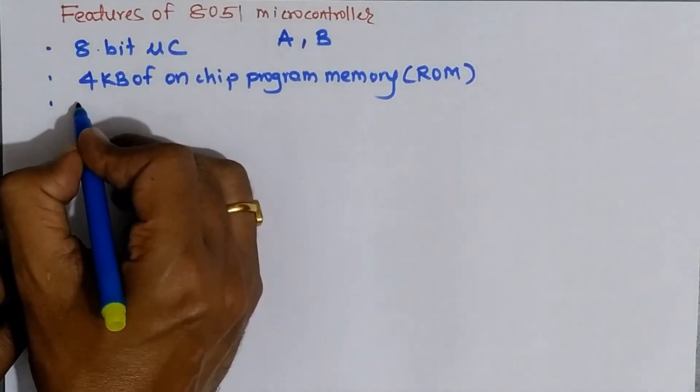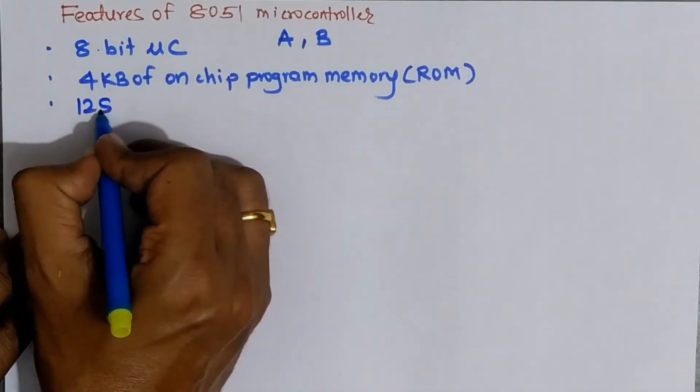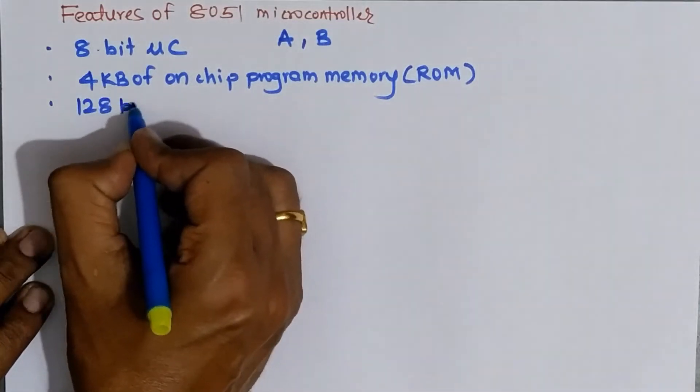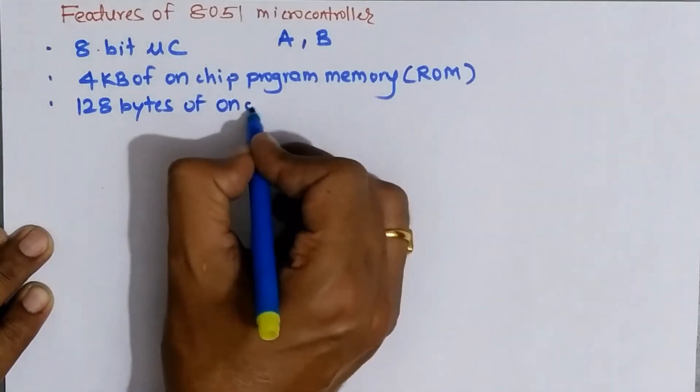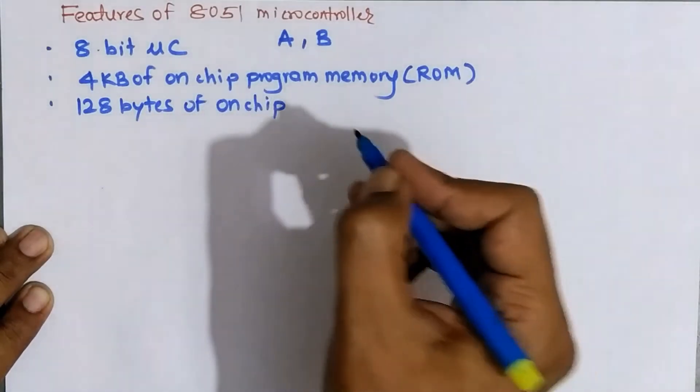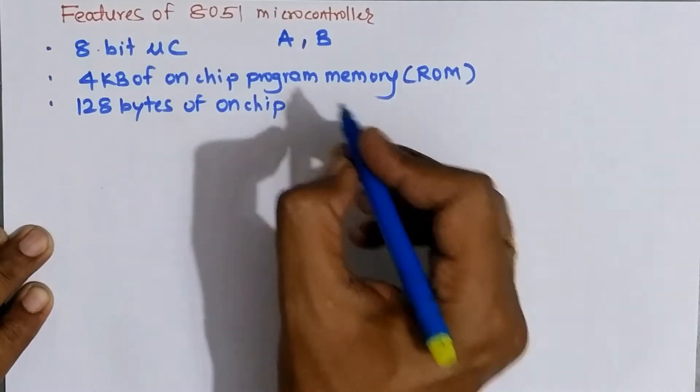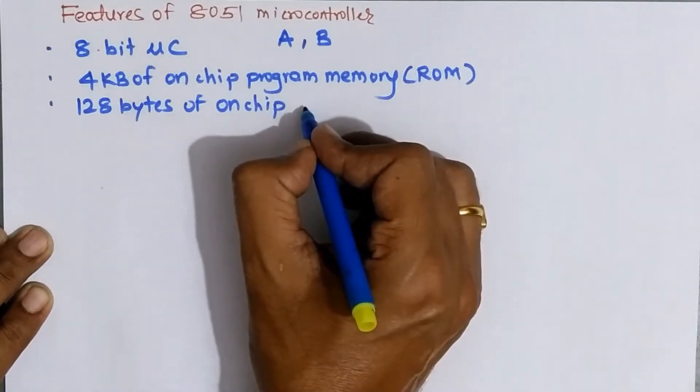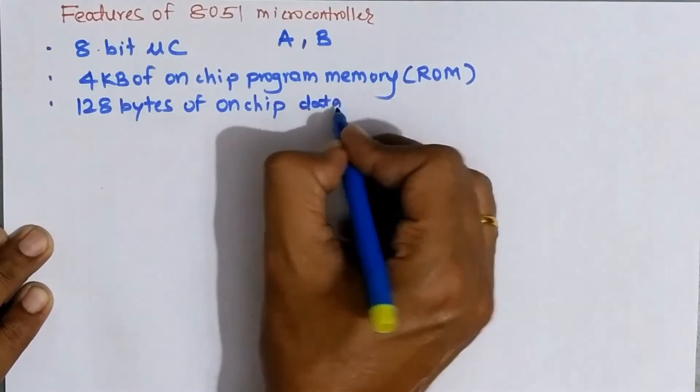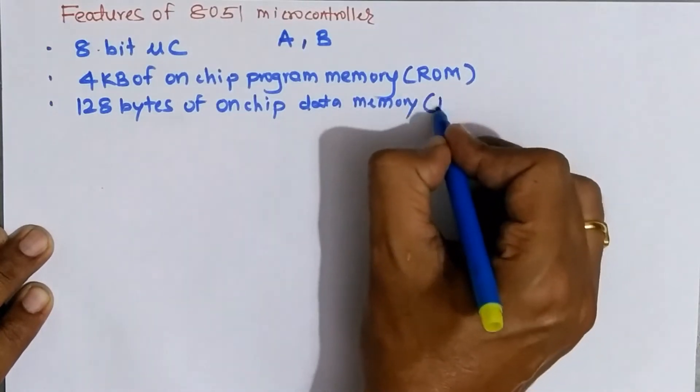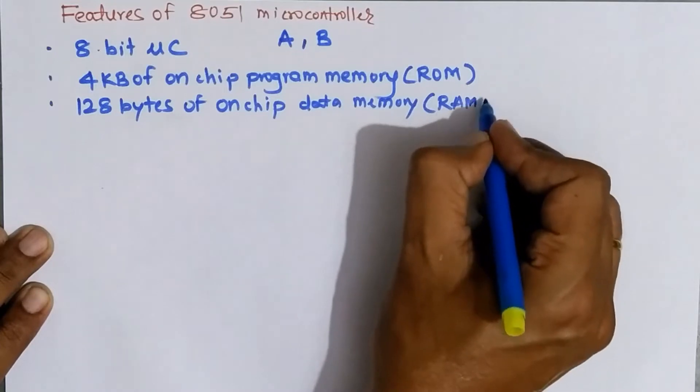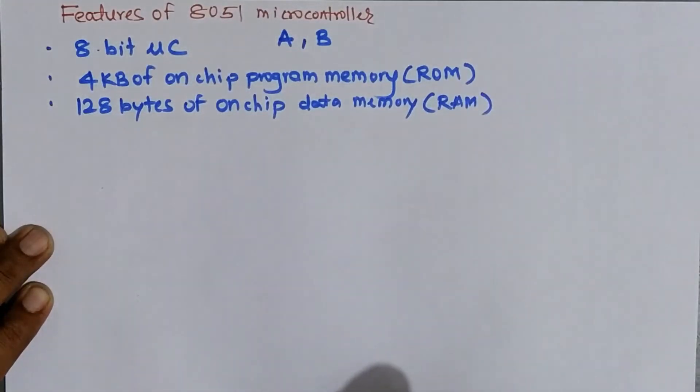The next feature is, apart from program memory, it also has 128 bytes of on-chip data memory. On-chip means it is present inside the chip. And this data memory holds temporary data. And the data memory is in the form of RAM.